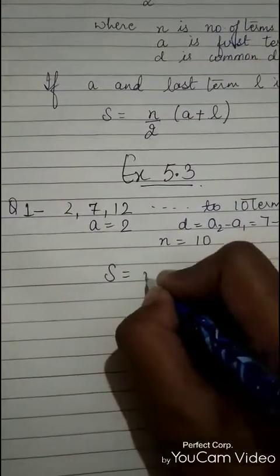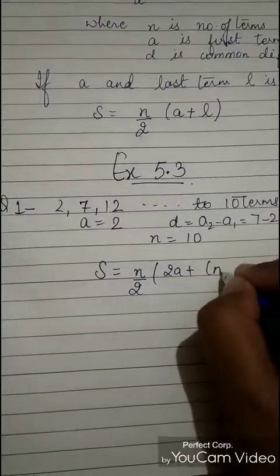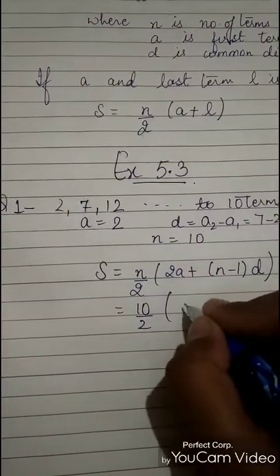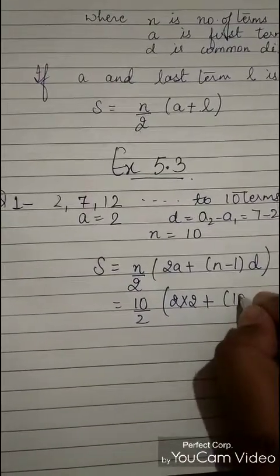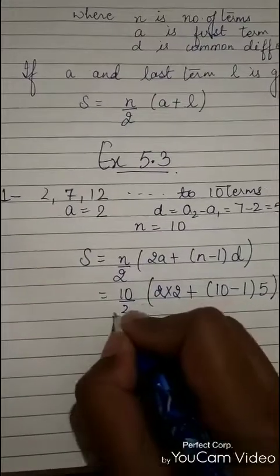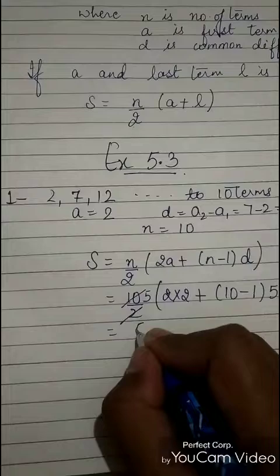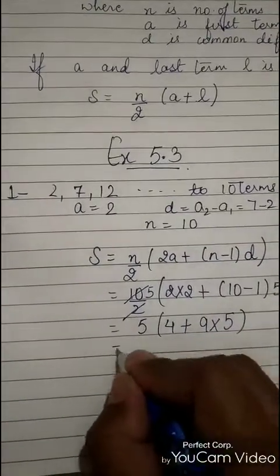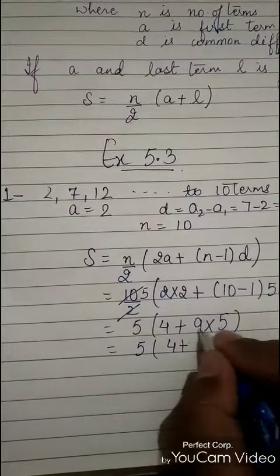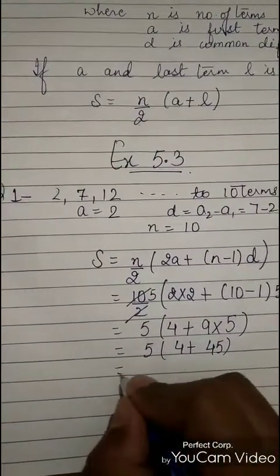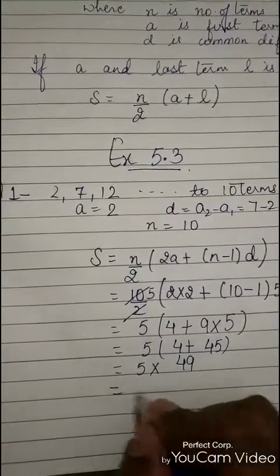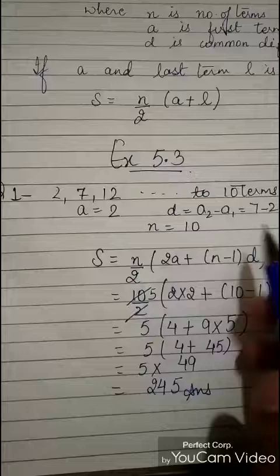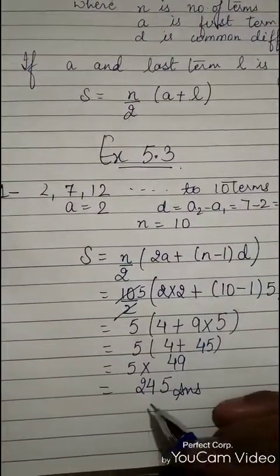Now write the formula for S: N upon 2, 2A plus N minus 1 into D. Here N is 10 upon 2, 2A is 2 into 2, plus N minus 1 that means 10 minus 1, into D is 5. Cancel the 2 and 10 to get 5. Solve: 5 into 4 plus 9 into 5 equals 5 into 4 plus 45, which is 5 into 49 equals 245. So sum of 2, 7, 12 up to 10 terms is 245.